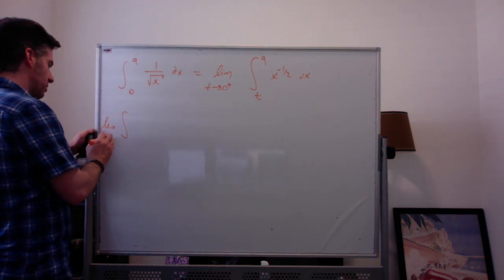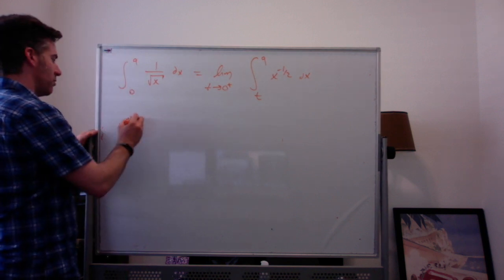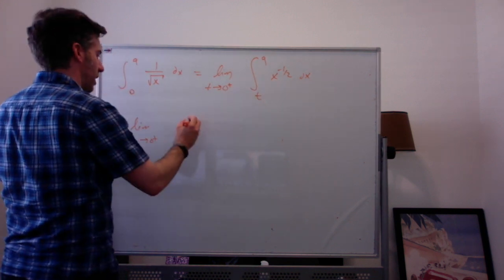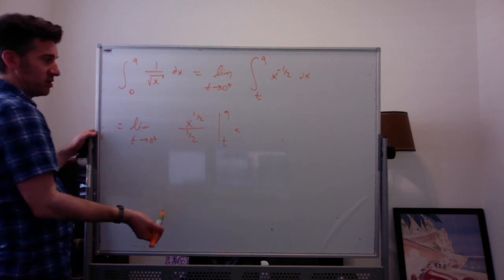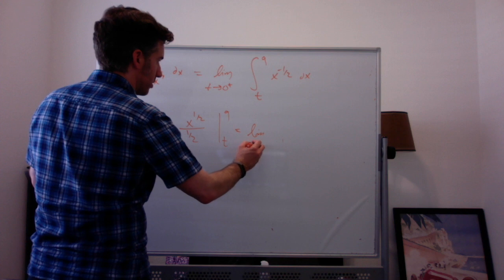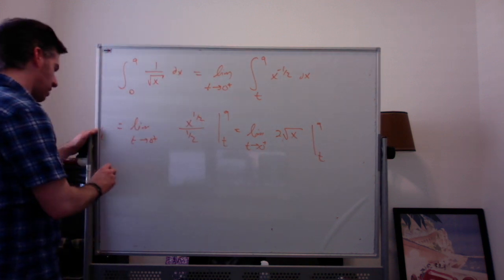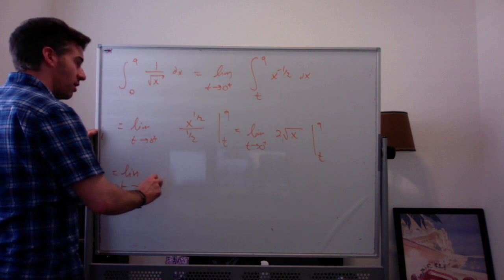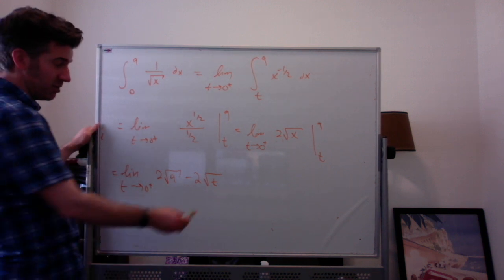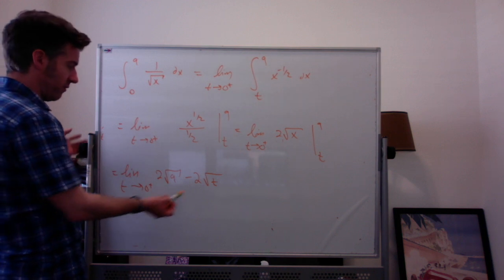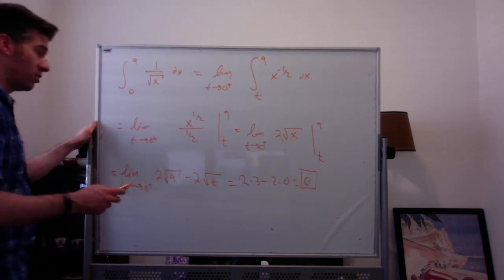So we get the limit as t goes to 0 from the right. Integrating x to the negative one half gives x to the one half divided by one half, which simplifies to 2 times the square root of x, evaluated from t to 9. Plugging in: the limit as t goes to 0 from the right of 2 times the square root of 9 minus 2 times the square root of t. Since t is approaching 0 from the right, t is positive, so we can take the square root. We get 2 times 3 minus 2 times 0, which is just 6. So this integral converges to 6.